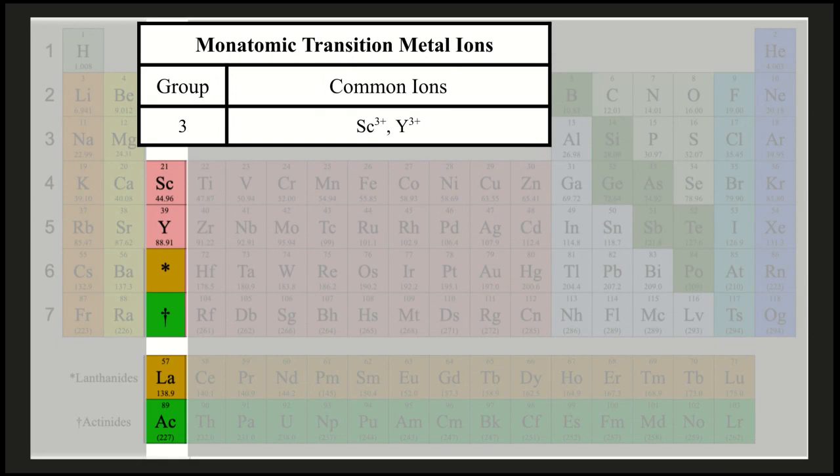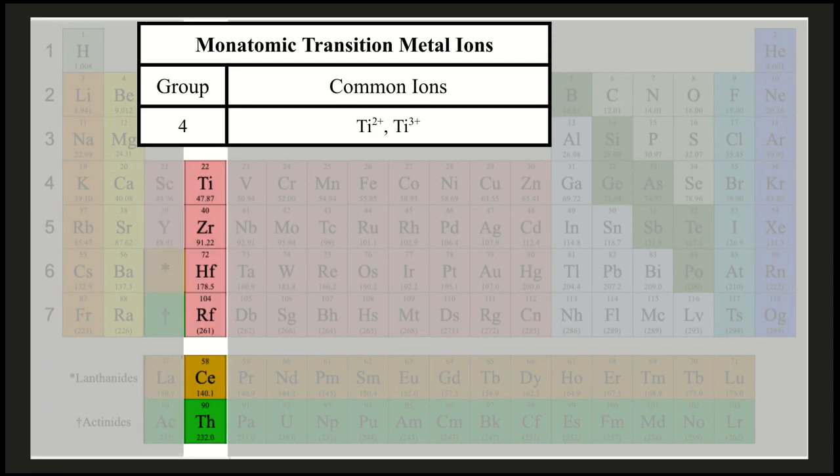We're going to go through and look at some of the possible charges by group. Scandium commonly comes with a 3-plus charge. Yttrium also commonly comes with a 3-plus charge. Titanium commonly comes with a 2-plus or a 3-plus charge. Remember, all of these are going to be cations because they are metals.